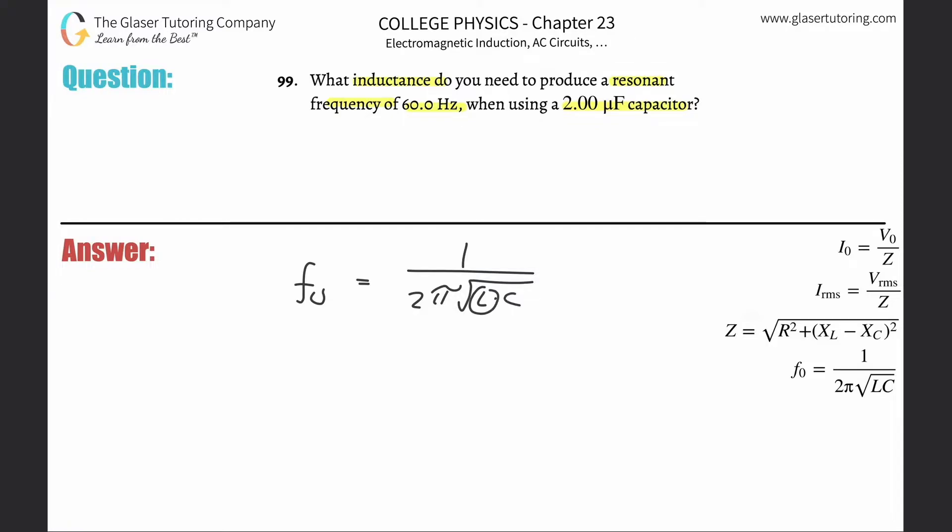So if I have to find the inductance, I have to bring this term out of the denominator and up into the numerator, and then I'm going to bring the resonant frequency on down. Then what I'm going to do is square both sides because I got to get rid of the square root, and then I'm going to have LC is equal to 1 divided by 2π times the resonant frequency.